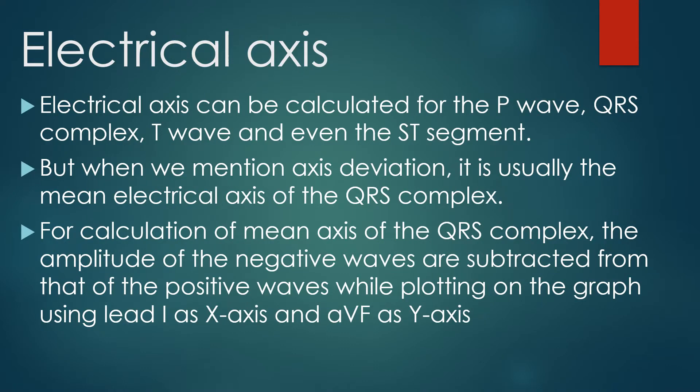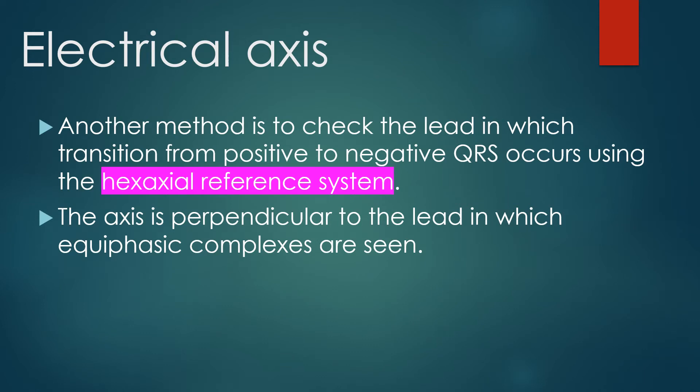Electrical axis can be calculated for the P wave, QRS complex, T wave, and even for the ST segment. When we mention axis deviation, it usually refers to the mean electrical axis of the QRS complex. For calculation of mean axis of the QRS complex, the amplitude of the negative waves is subtracted from that of the positive waves while plotting on a graph using lead 1 as x-axis and AVF as y-axis. Another method is to check the lead in which transition from positive to negative QRS occurs using the hexaxial reference system, where the axis is perpendicular to the lead showing equiphasic complexes.